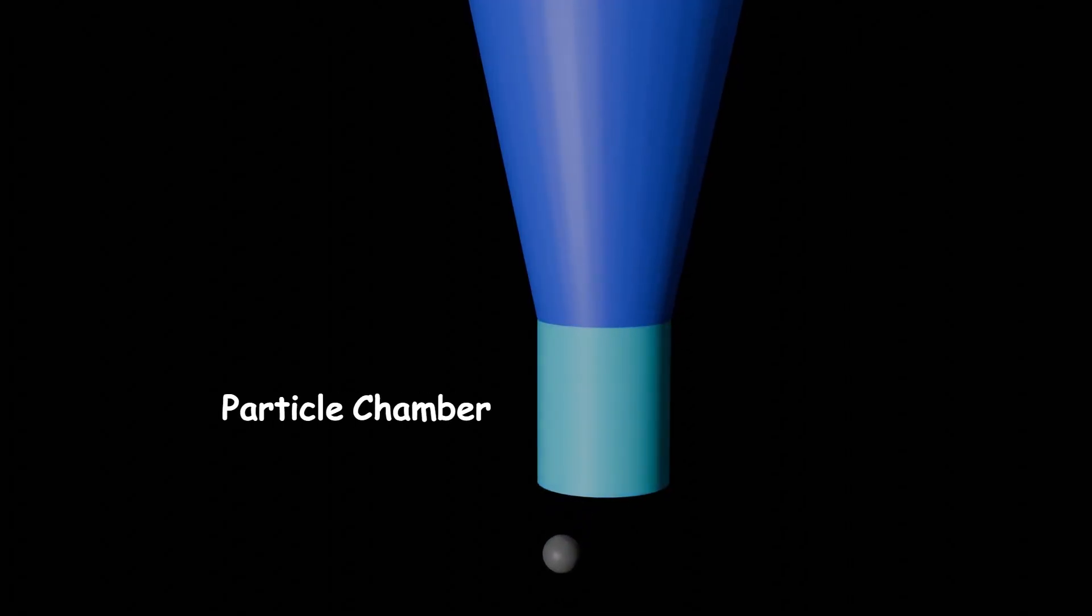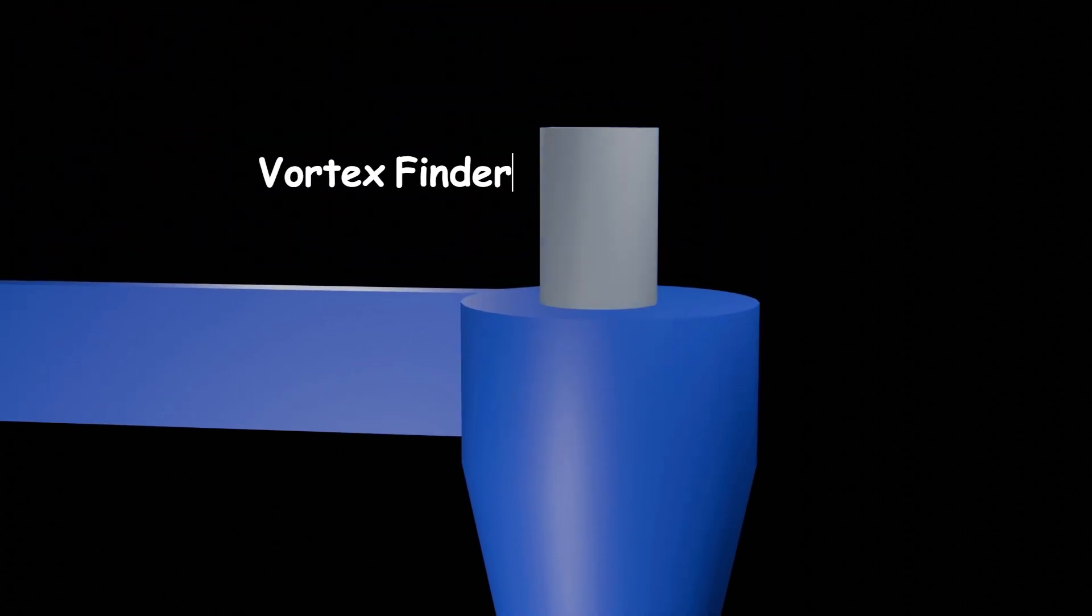The collected particles in the particle chamber are periodically discharged, while the clean air spirals back up through the middle and exits at the vortex finder at the top. The vortex finder is the top cylindrical outlet where the clean gas vortex leaves the cyclone.